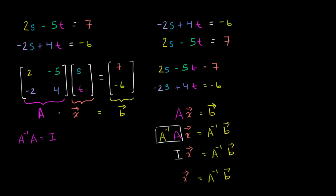Why is this useful? Yes, you do have to go through the trouble of calculating A inverse, but once you've done that, you can keep swapping in different b vectors. This one is 7, negative 6, but you could have other b's. If you're running a computer program and want to do this over and over again, you just have to do multiple matrix multiplications. I've realized I'm approaching 10 minutes. In the next video, we'll actually compute what A inverse is and calculate the solution vector x.